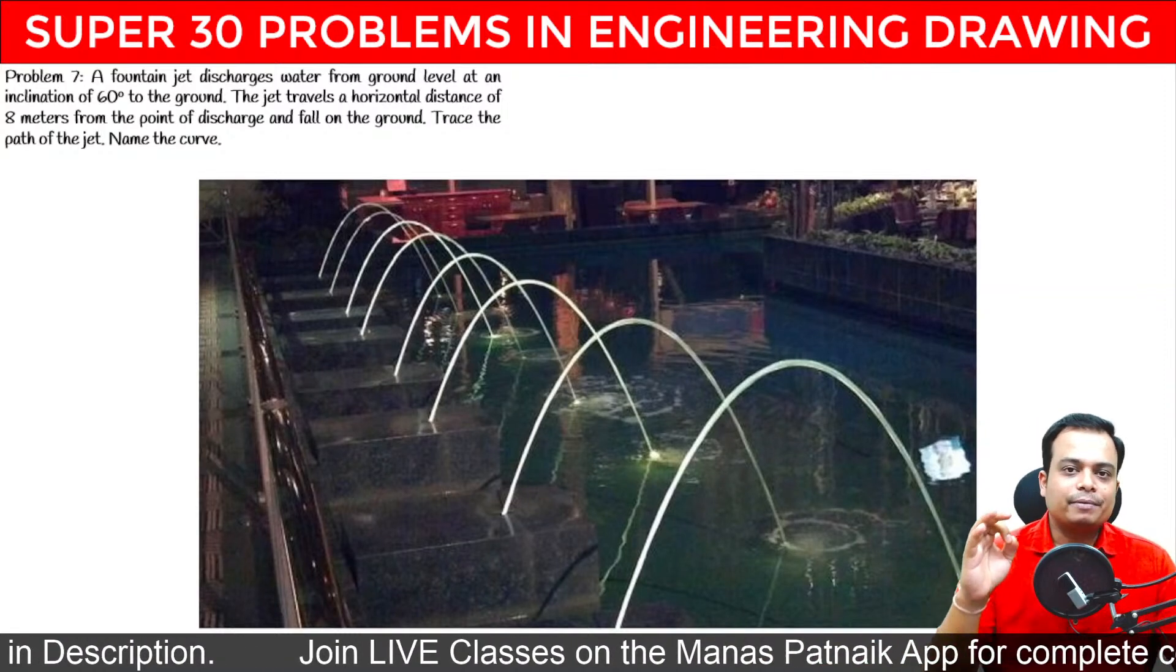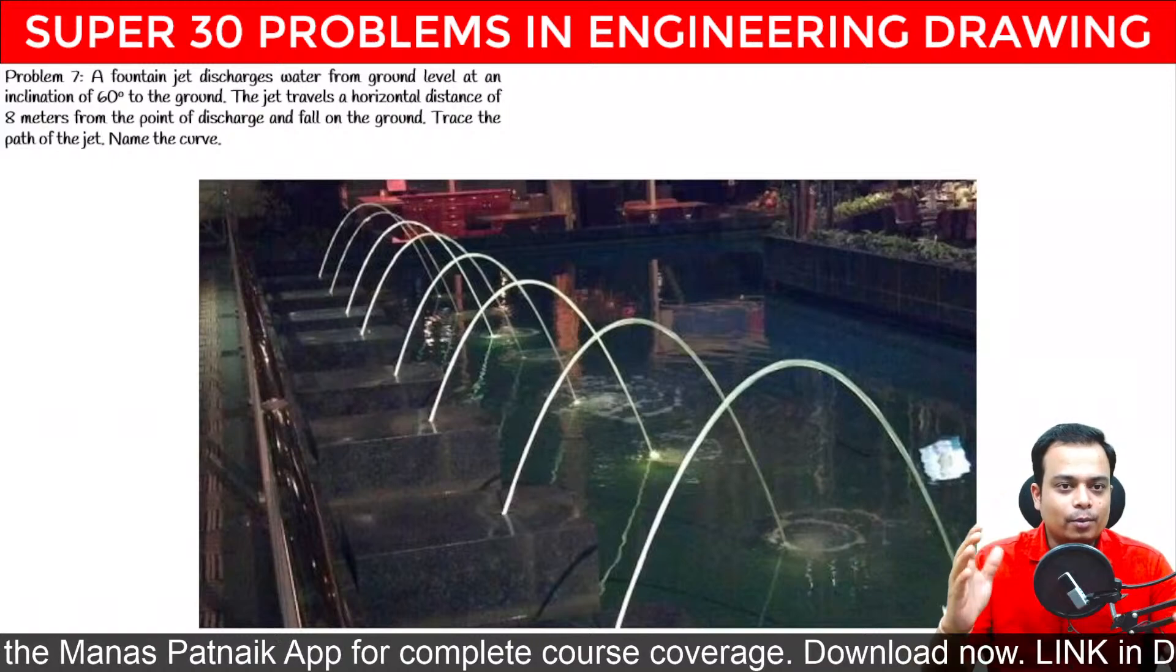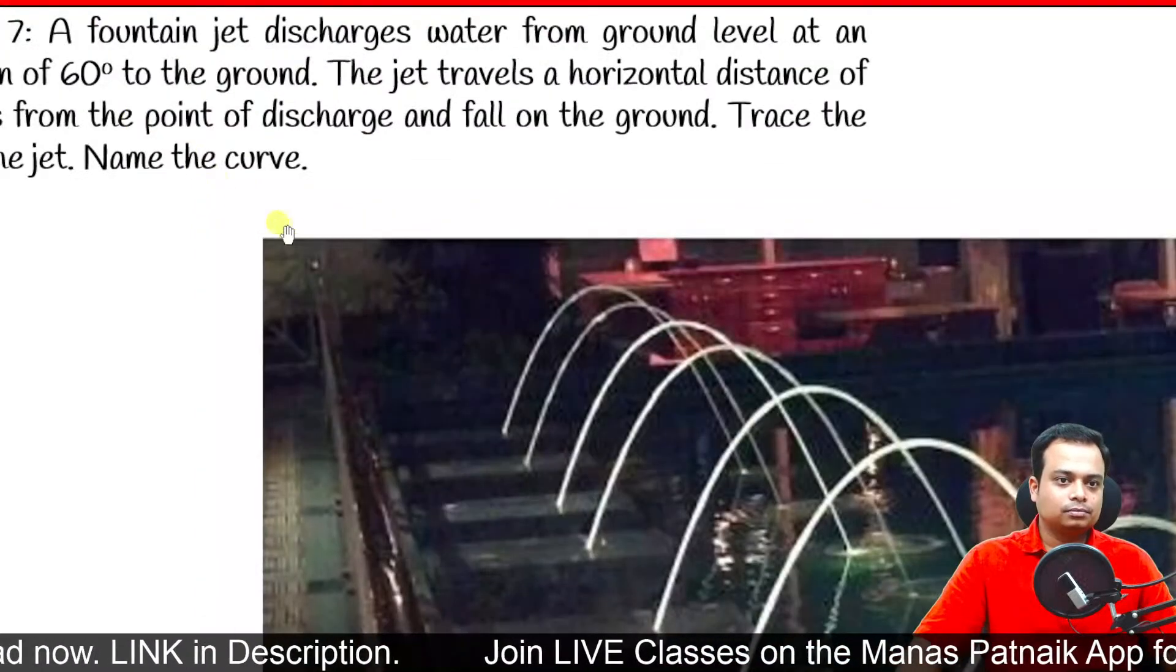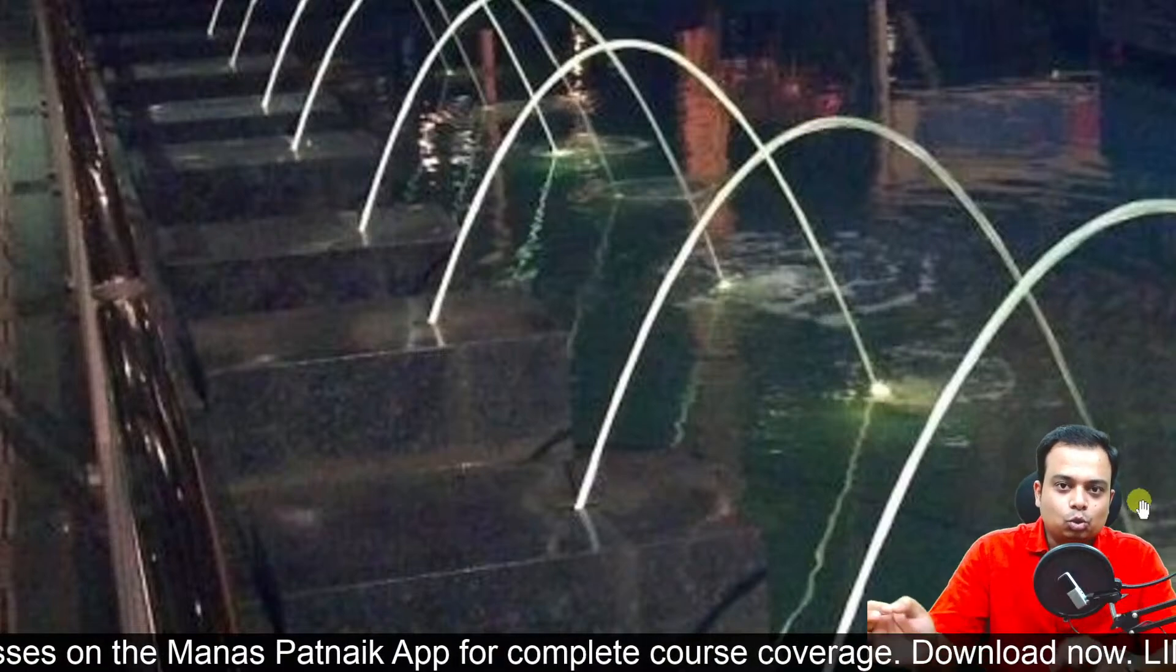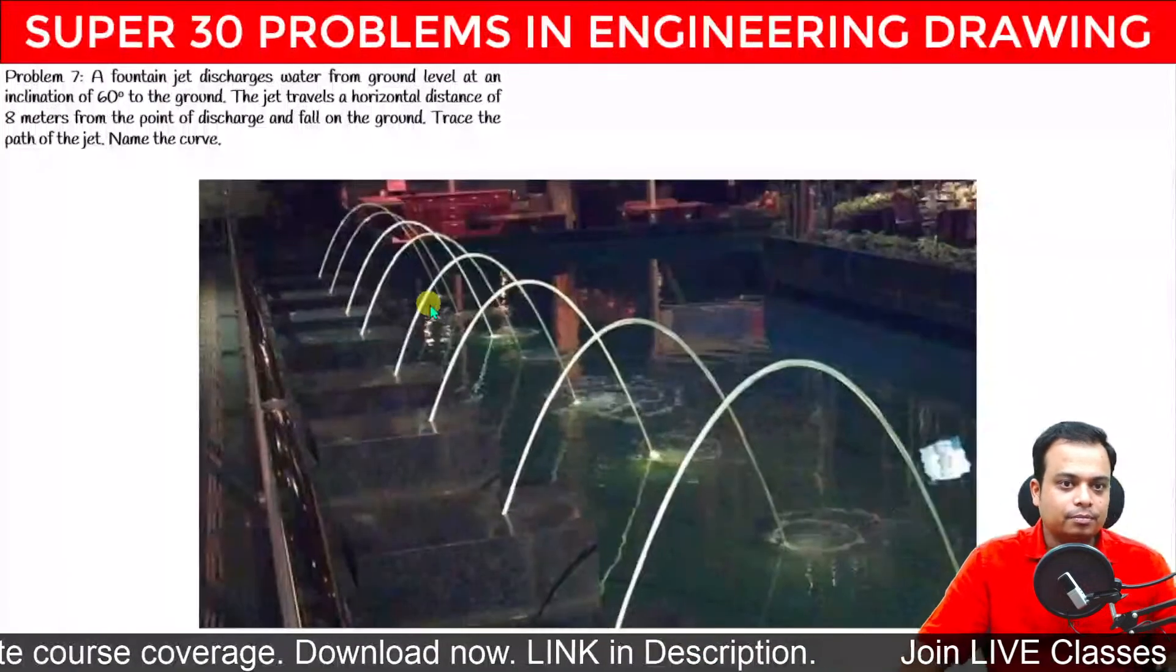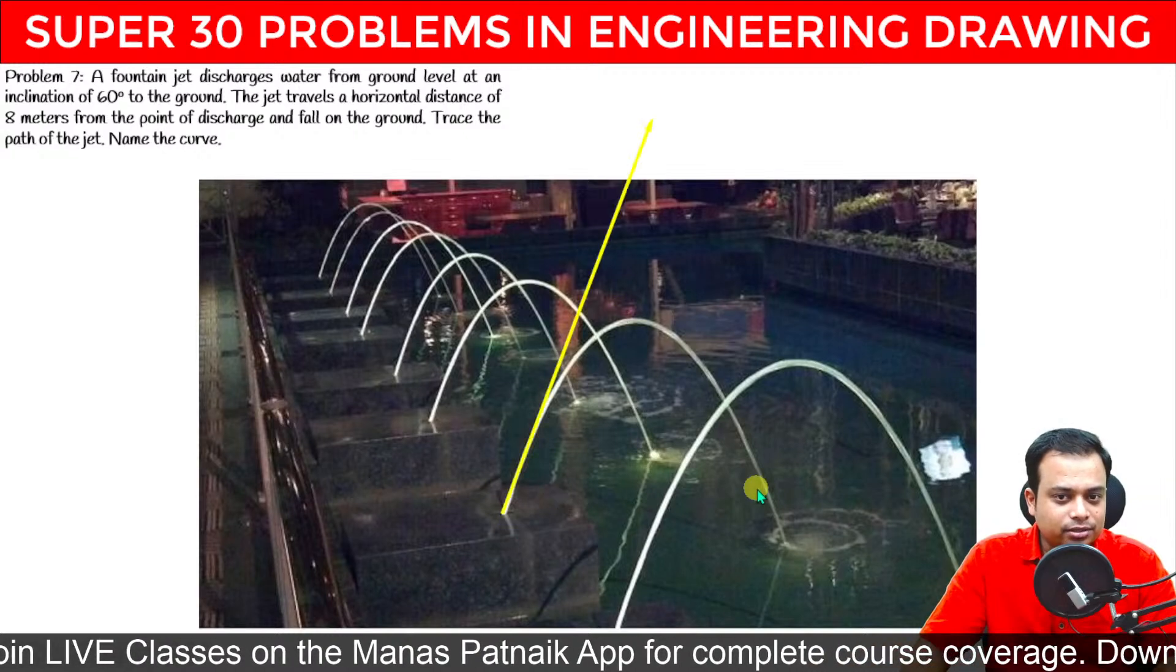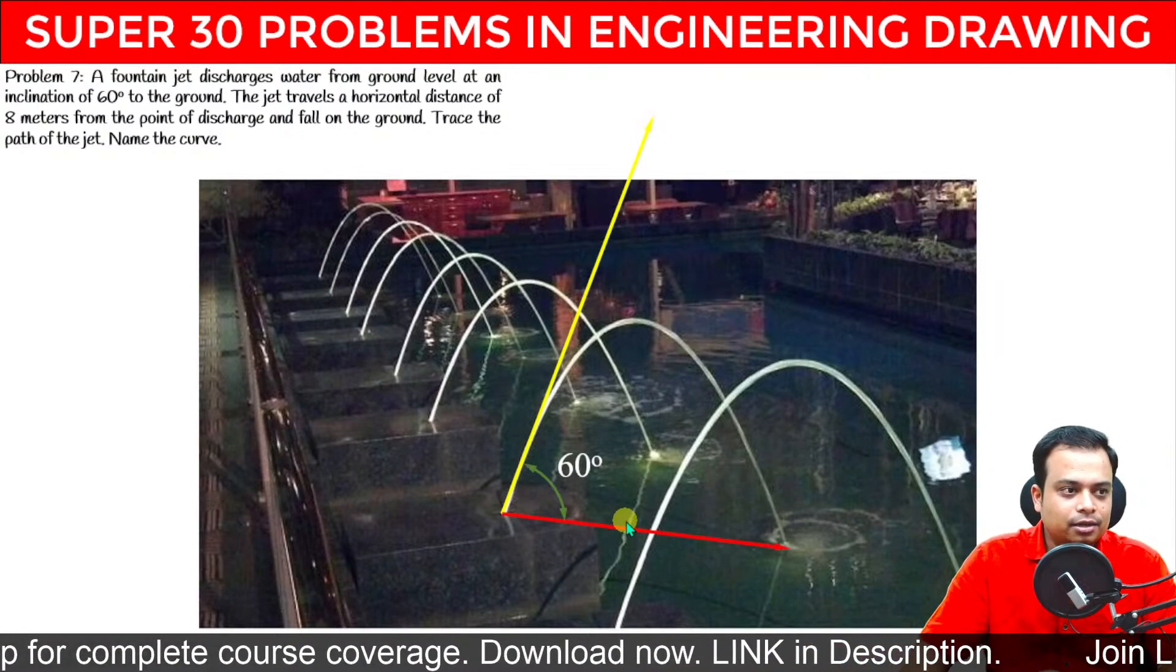In today's session, it's going to be problem seven, and this is based on a fountain jet. I call this the fountain jet problem. There happens to be a fountain jet, and it is obviously going to shoot some water constantly, and this water is actually in the shape of a parabola. Now the angle that it makes with the ground or with the water level is 60 degrees. The angle made with the water surface is going to be 60 degrees, that is exactly what has been given in the problem.